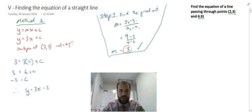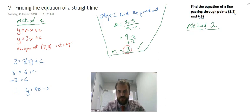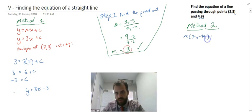Now let's look at our second method. Method 2 relies upon a rearrangement of the gradient formula. If I know that m equals y2 minus y1 over x2 minus x1, I can rewrite that as m times x2 minus x1 equals y2 minus y1. There's no trickery there, I've just rearranged the gradient formula.